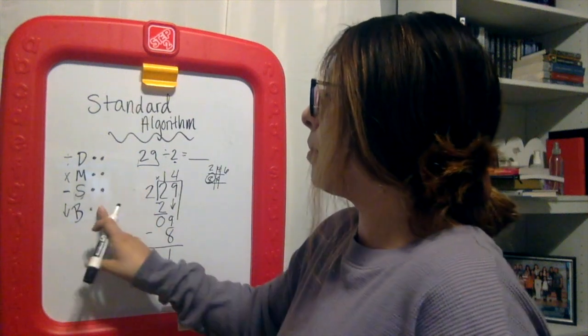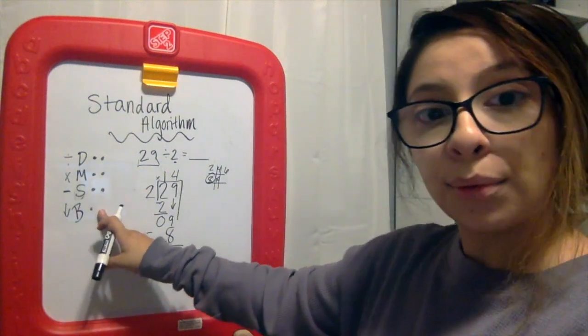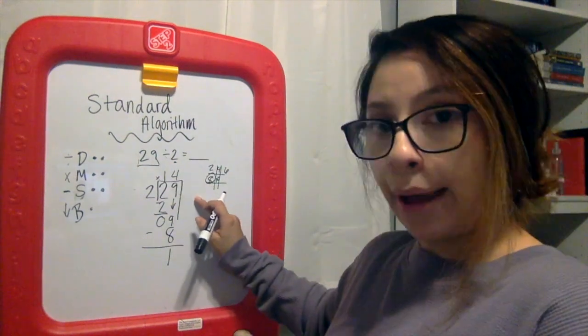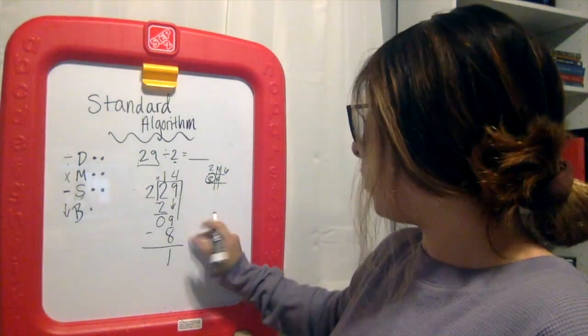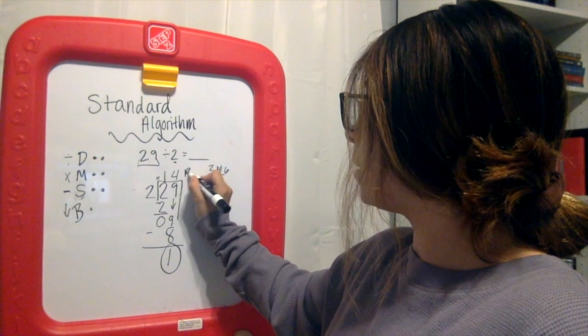Now a lot of people will say, what about our bring down? Well, good question. Is there another digit to bring down? Hopefully you're saying no. So this is our remainder 1.